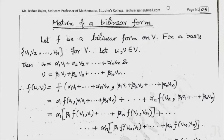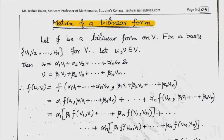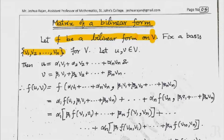If you have a bilinear form, you can find the matrix representation — the matrix of a bilinear form. Let f be a bilinear form on V. V is a vector space; we can find the dimension of the space, and we can find a basis v1, v2, etc., up to vn.